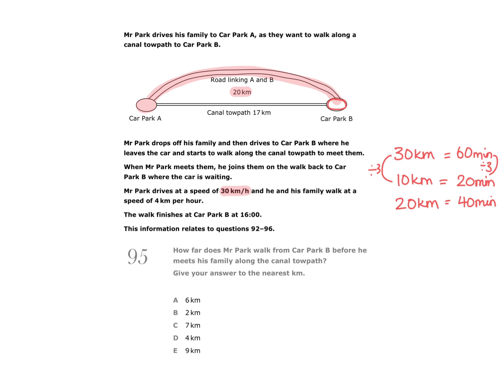But of course the family would have started walking. They will begin walking from car park A as soon as they're delivered there. We know that they walk at a speed of 4 kilometres per hour, so that would be 4 kilometres in an hour, which is the same as 60 minutes. We're looking for how far they will have walked in 40 minutes. So first of all, let's think about a 20-minute time period. To change 60 into 20, I would divide by 3.